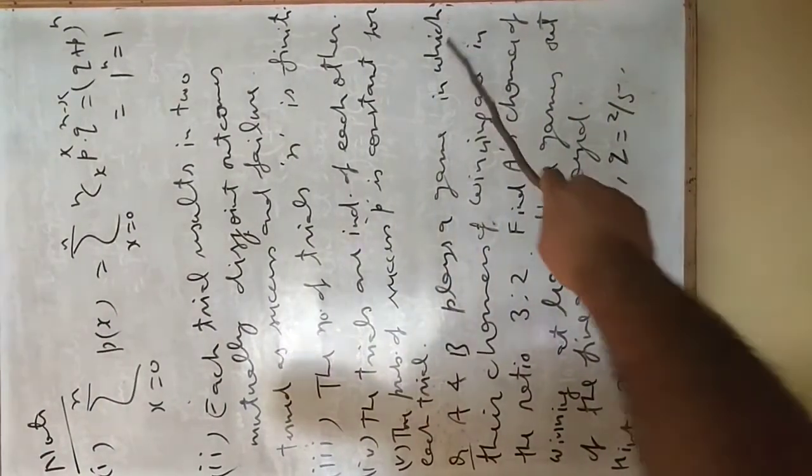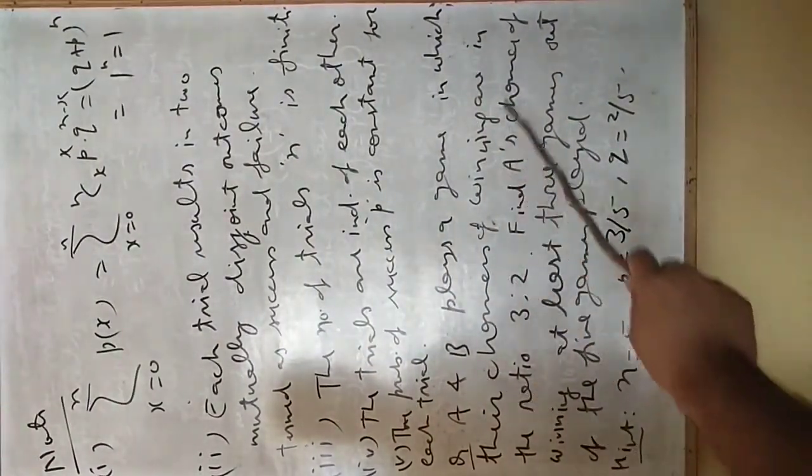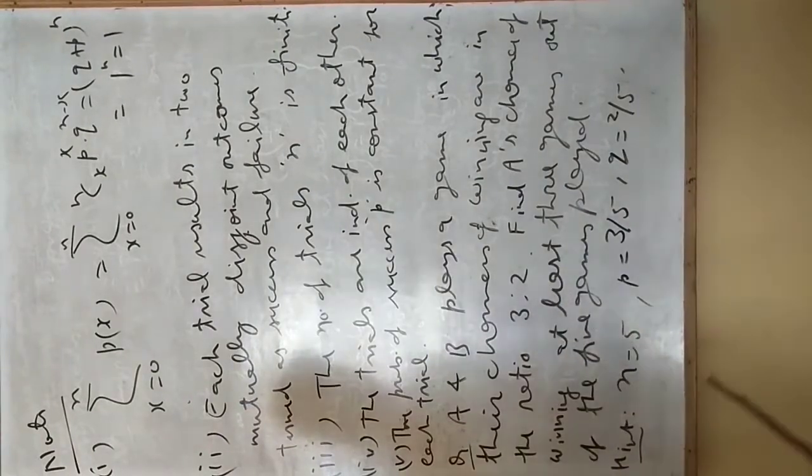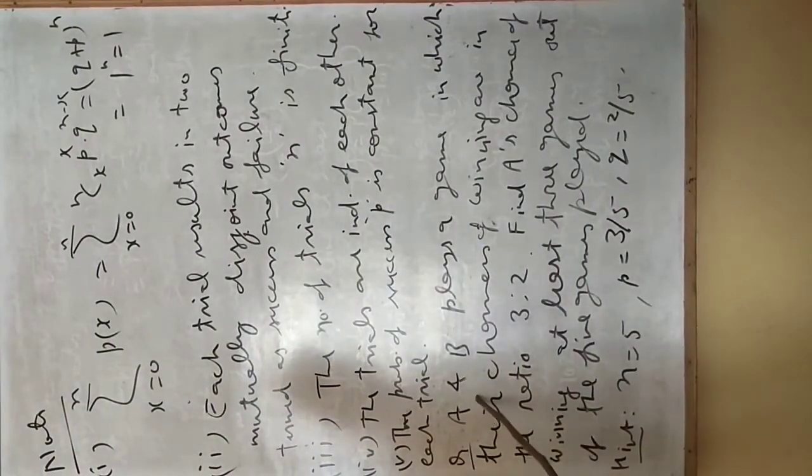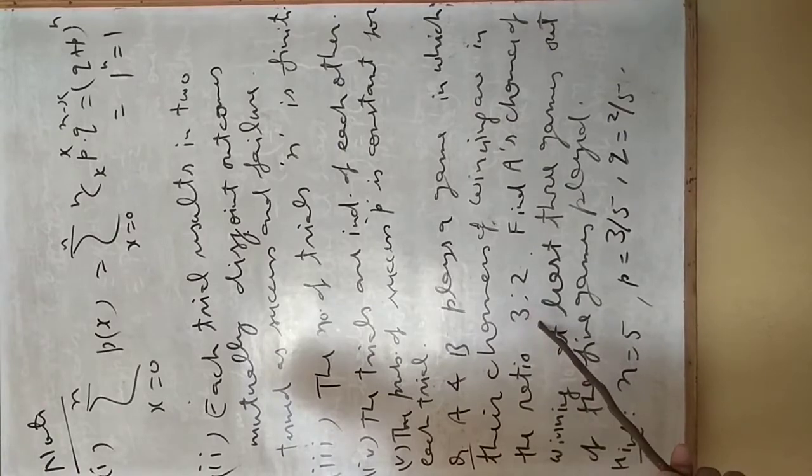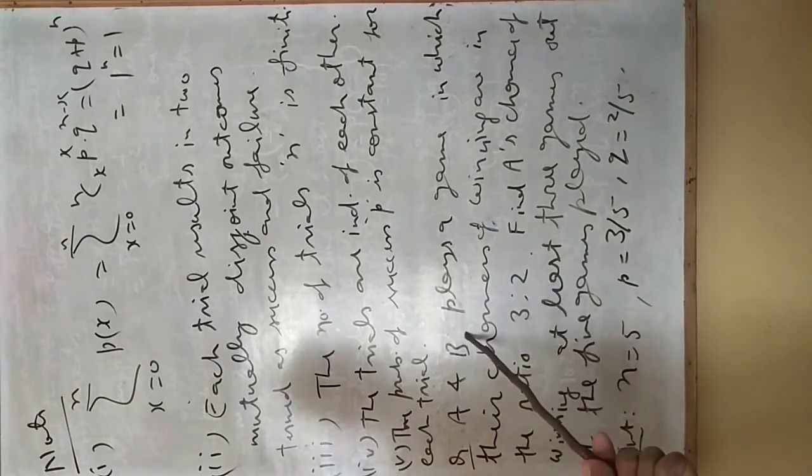They play a game in which their chances of winning are in the ratio 3 to 2. A's chance of winning and B's chance of winning are in the ratio of 3 to 2.